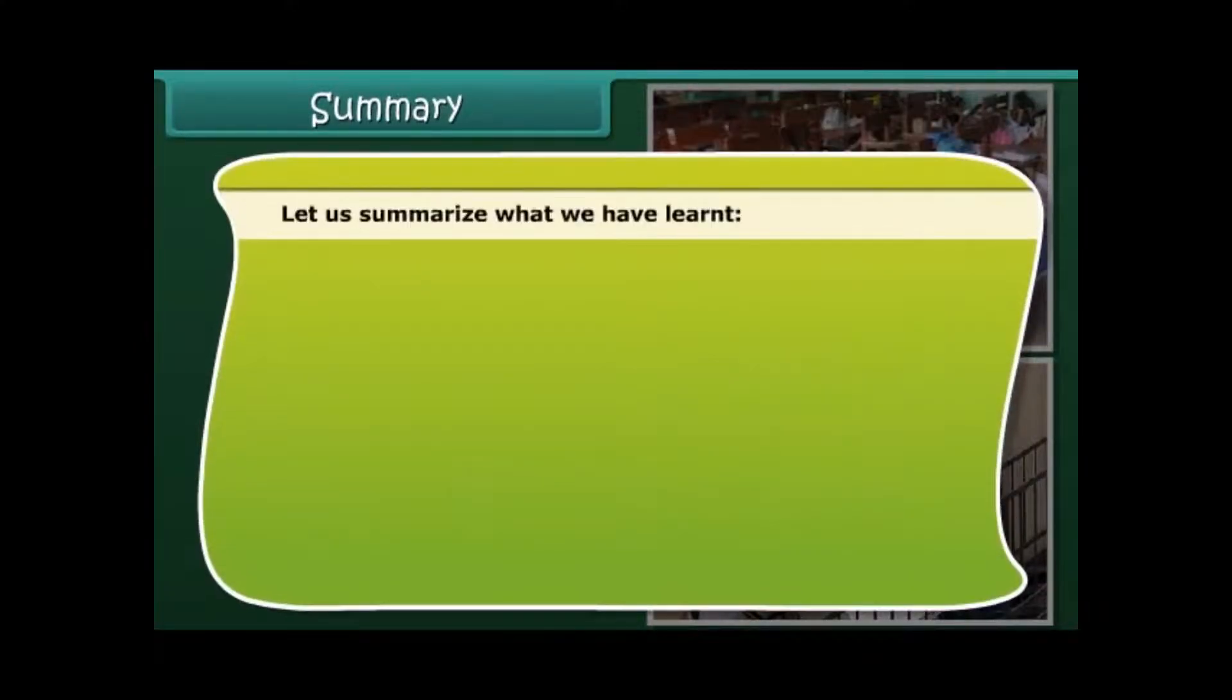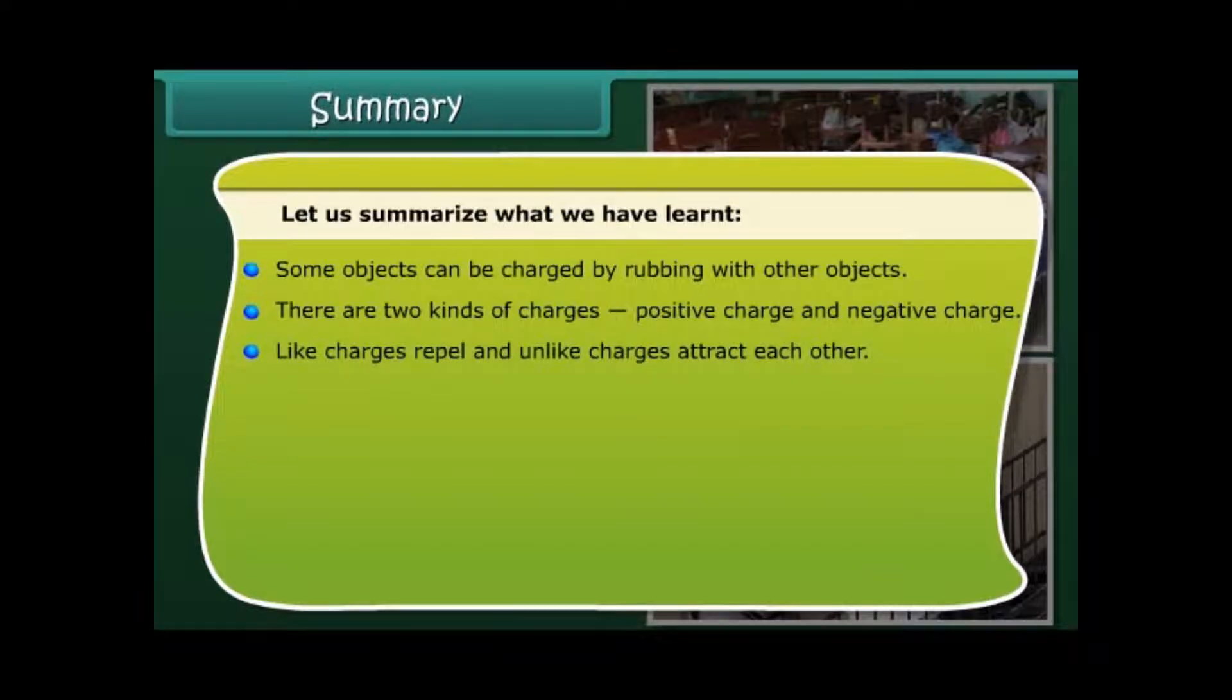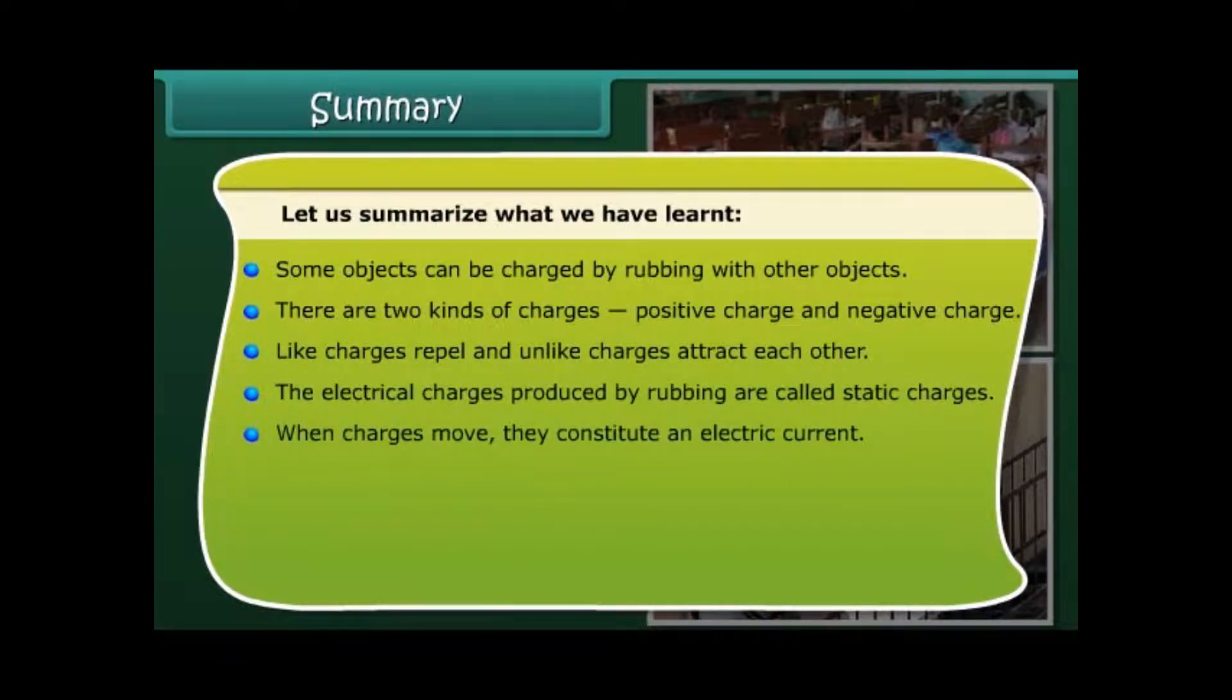Let us summarize what we have learned. Some objects can be charged by rubbing with other objects. There are two kinds of charges: positive charge and negative charge. Like charges repel and unlike charges attract each other. The electric charges produced by rubbing are called static charges.